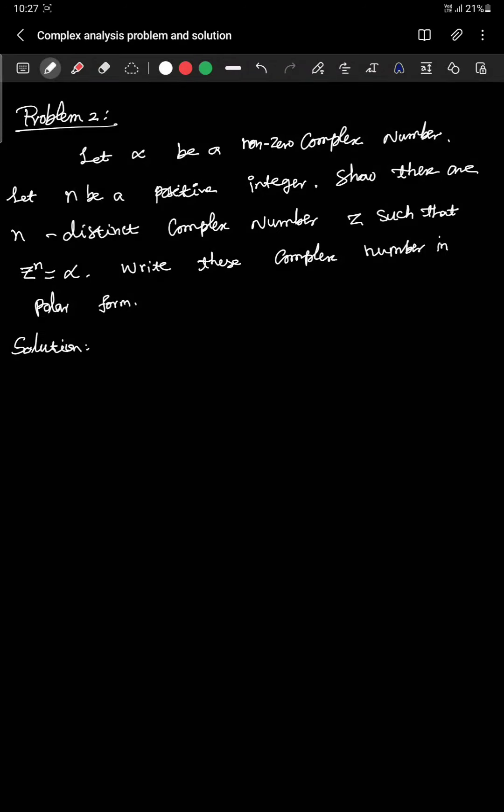Hello friends, now we are going to see this problem as a second problem of complex problem series. Let α be a non-zero complex number. Let n be a positive integer, that is a natural number. Show that there are n distinct complex numbers z such that z^n equals α.